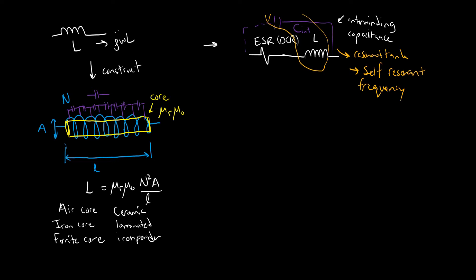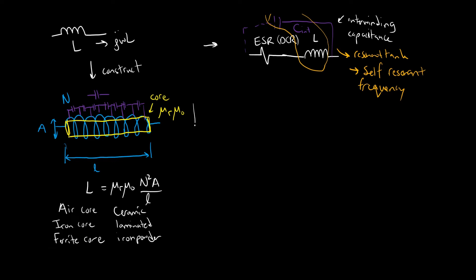This basic model highlights one of the primary losses in inductors: conduction loss. This is a very large contributor to loss. Core losses exist as well, but conduction loss is straightforward to calculate and gives you a good idea of how well your inductor will perform. P_conduction_L equals I²_RMS times ESR — the square of the RMS current times the ESR or DCR. This is a pretty good model for conduction loss.